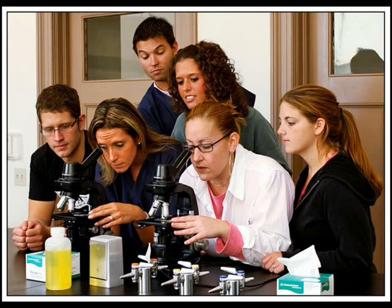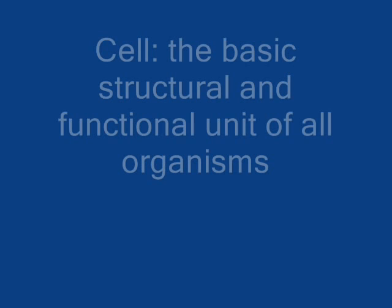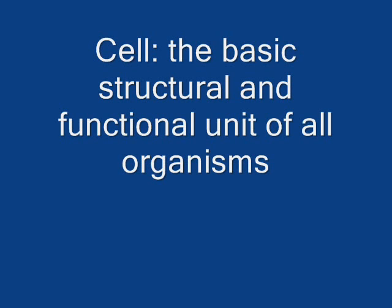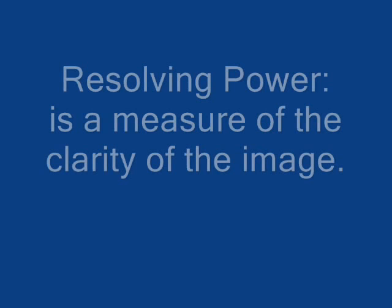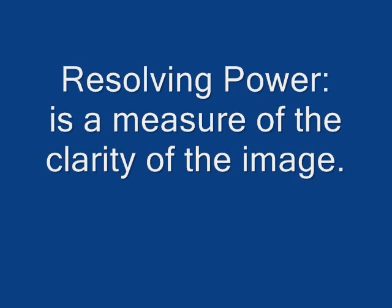Once under the microscope, Miss Smith could see cells from the suspect. The cell is a basic structural and functional unit of all organisms. Cells are usually too small to be seen by the unaided eye, which is why scientists use microscopes and their resolving power to study them. Resolving power is a measure of the clarity of the image.